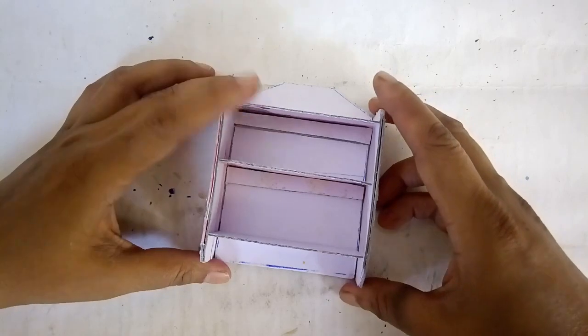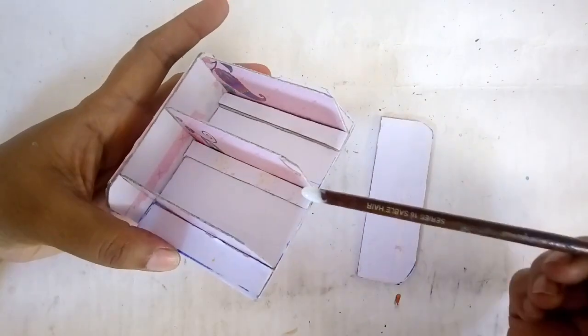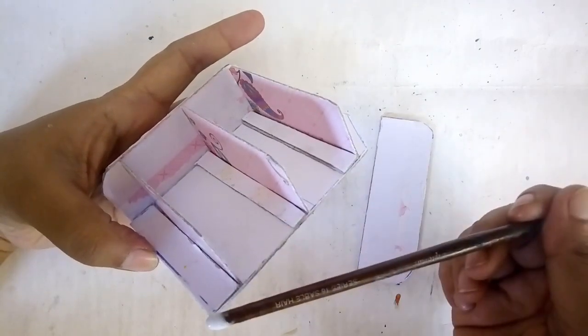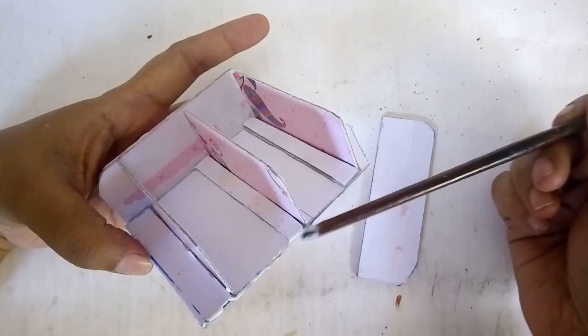Then I'm going to stick them again with PVA glue onto the sides like this. Now with the frame ready it's easy to add the glue just along the edges and then stick everything together.